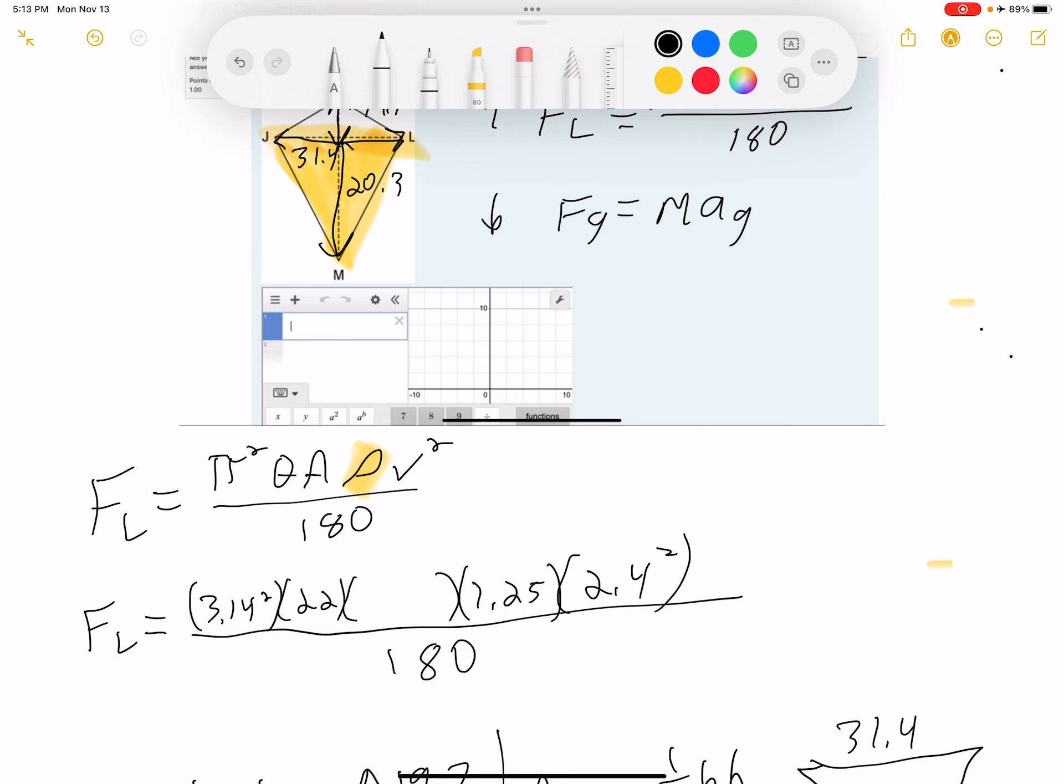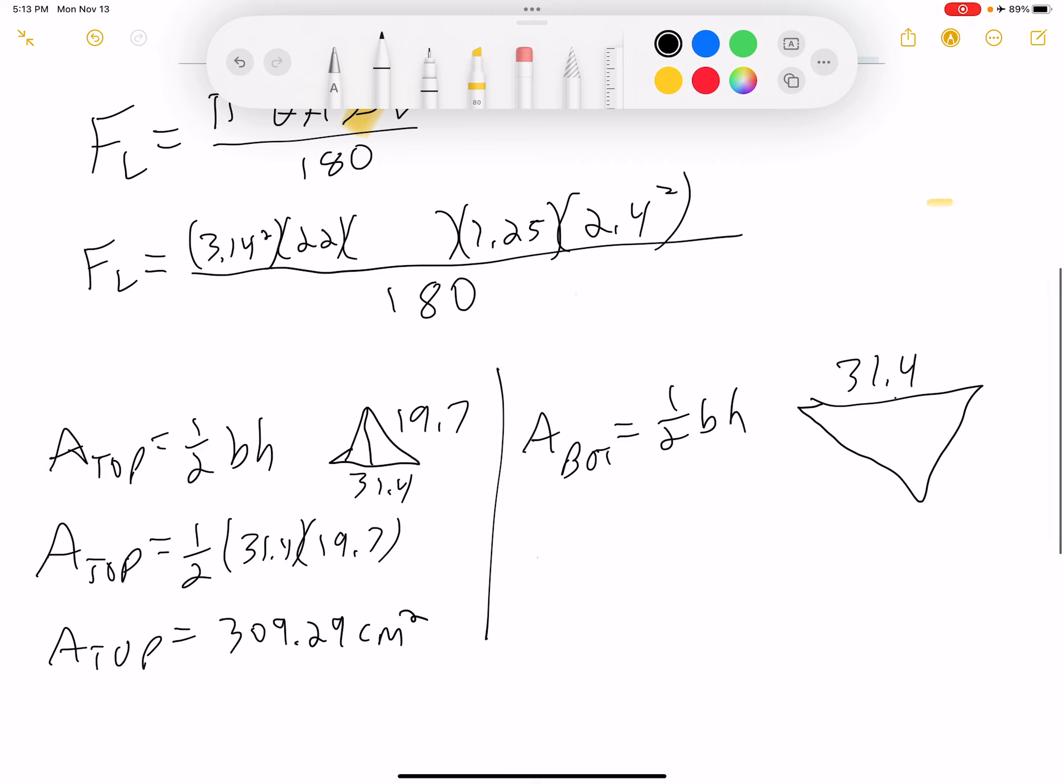So this distance here is 20.3. So our area of the bottom is 1 half, 31.4 times 20.3. So the area of the bottom is 318.71.